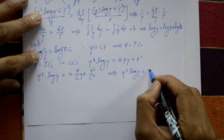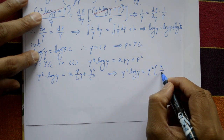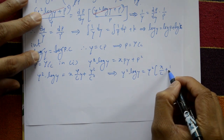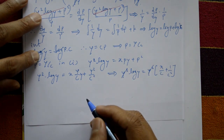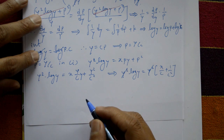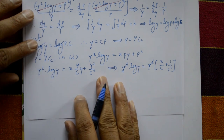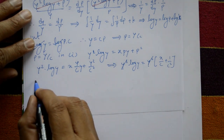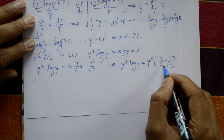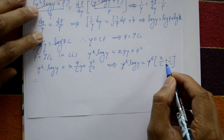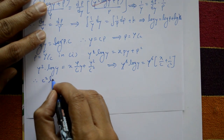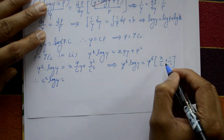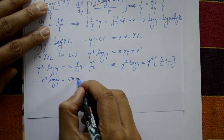Factoring y² on the right: y² is common, so y² log(y) = y²(x/c + 1/c²). Canceling y² from both sides, then multiplying through by c²: c² log(y) = cx + 1. This is the general solution.